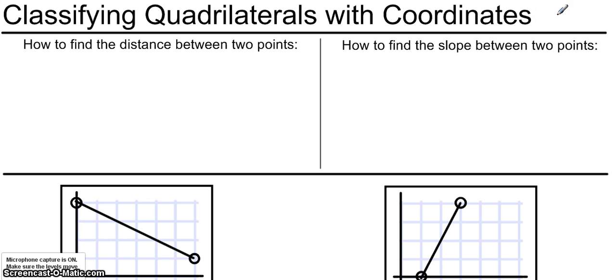Before we get started, we're going to need a quick refresher on how to find distance and slope on a coordinate grid. In these two boxes, write down how you would find distance between two points on a coordinate grid, and how you would find slope between two points on a coordinate grid. Don't just write an explanation. Actually write down the formulas that you would use.